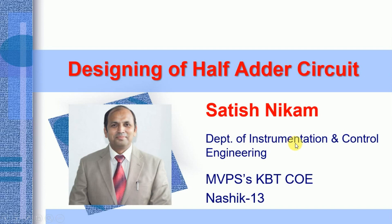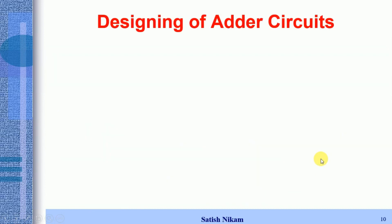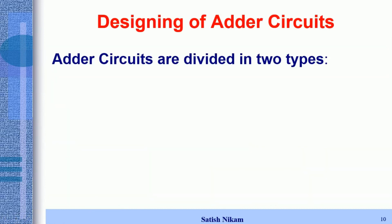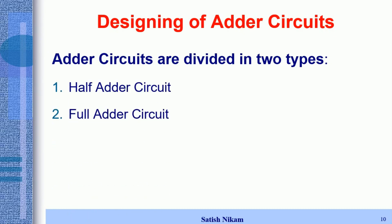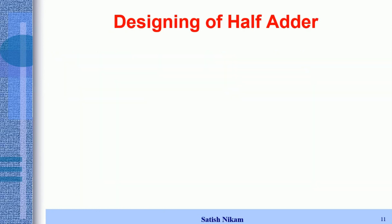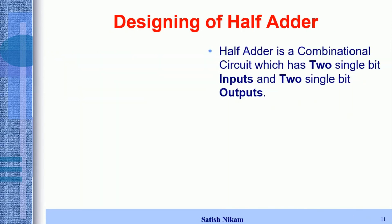Hi friends, in this lecture we are going to design the half adder circuit. Adder circuits are divided into two types: the first one is the half adder circuit and the second one is the full adder circuit. In this lecture we are going to design the half adder circuit, which is a combinational circuit with two single-bit inputs and two single-bit outputs.